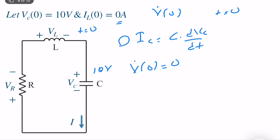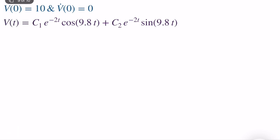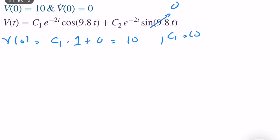Now with both initial conditions we can solve for C1 and C2. Setting t = 0 in the general solution: V(0) = C1·e^0·cos(0) + C2·e^0·sin(0) = C1·1·1 + C2·1·0 = C1. Since V(0) = 10, we get C1 = 10.